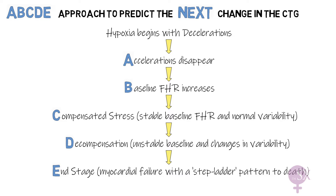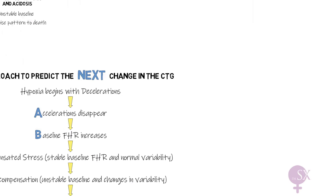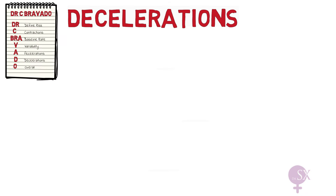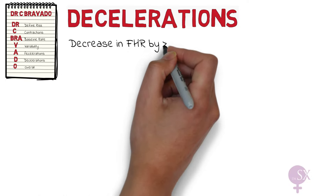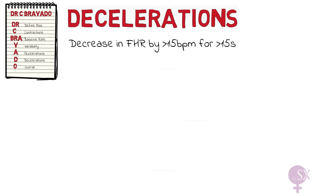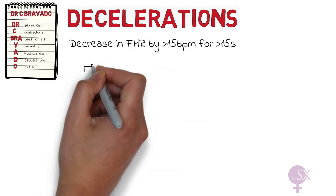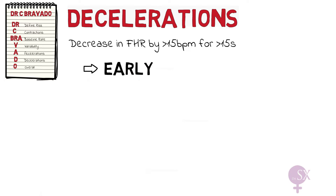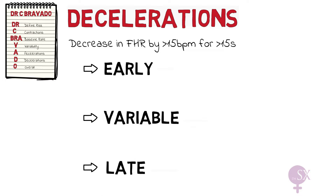Now that we've got our physiology sorted, let's go back to the decelerations. Decelerations are defined as a drop in the fetal heart rate by more than 15 beats per minute for more than 15 seconds. And we've got three types: early, variable, and late decelerations.